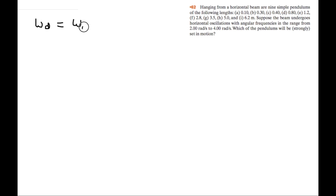So this is a resonance question. We're looking for which pendulums will have a natural angular frequency between 2 and 4. Instead of solving for the angular frequency of every single length, we'll go backwards from the driving angular frequencies to find the range of lengths, and then we can simply see which pendulums are in that range.